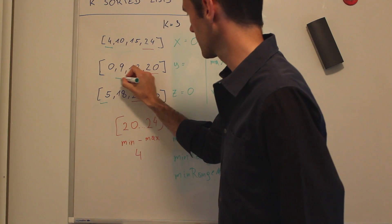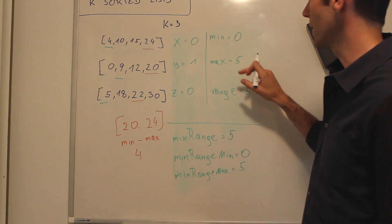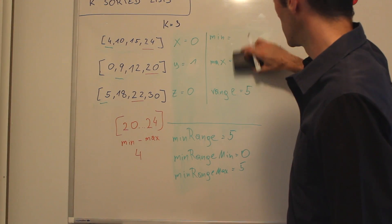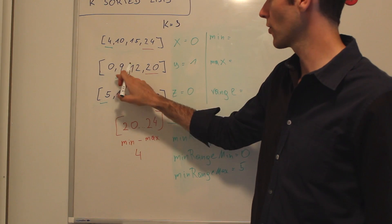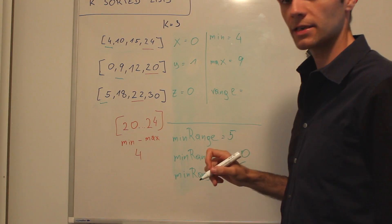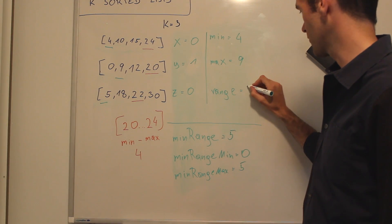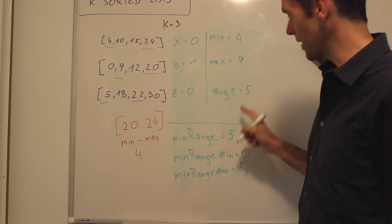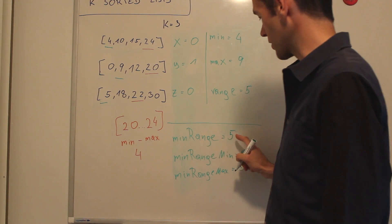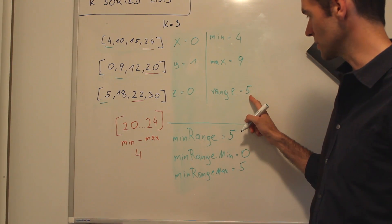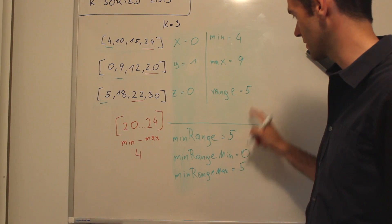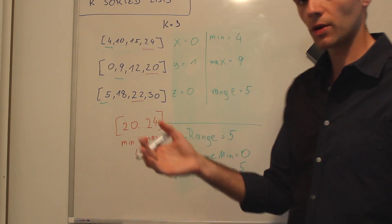Now at index 1, we're trying to find out min, max, and range again. We have 4, 9, and 5. 4 is the minimum, 9 is the current maximum, and the range is again 5. This range equals the min range we found so far, so no change. We're only doing a change if this new range is smaller — strictly smaller. So no change here, and you'll probably see where this is going.